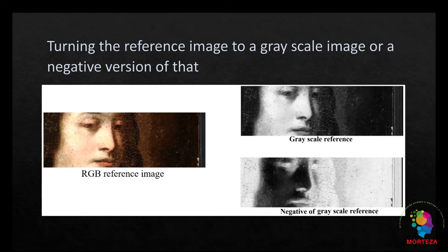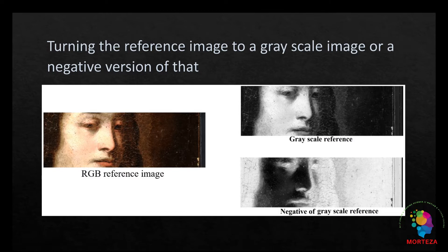The first stage is that the XRF images resemble a black and white image, and in some cases they resemble the negative of a black and white image. Therefore, the reference RGB image is changed to a grayscale or a negative grayscale image. So this reference image is first changed to a grayscale, or the negative of grayscale which is 1 minus this image, assuming that the image is normalized between 0 and 1.